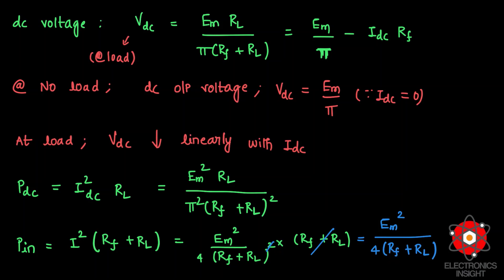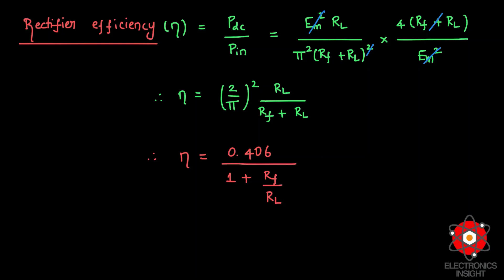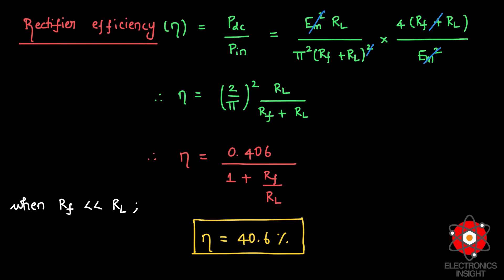The rectifier efficiency η is the ratio of DC power delivered to the load to the total input power. After cancelling common terms, η = (2/π)²·[RL / (RF + RL)] = (4/π²)·[1 / (1 + RF/RL)]. Since 4/π² ≈ 0.406, when the forward resistance RF is very small compared to RL, the RF/RL term becomes negligible, and the rectifier efficiency reaches its theoretical maximum value of 40.6%.